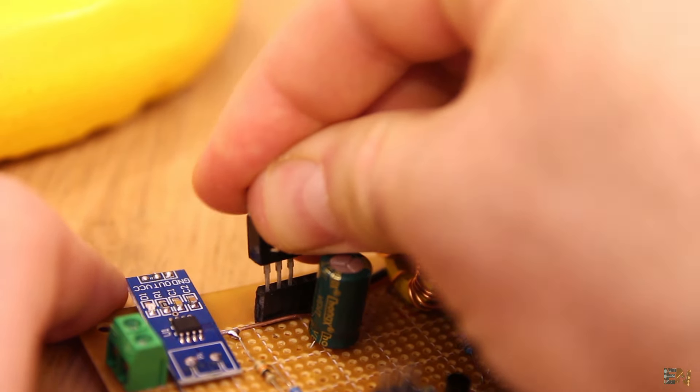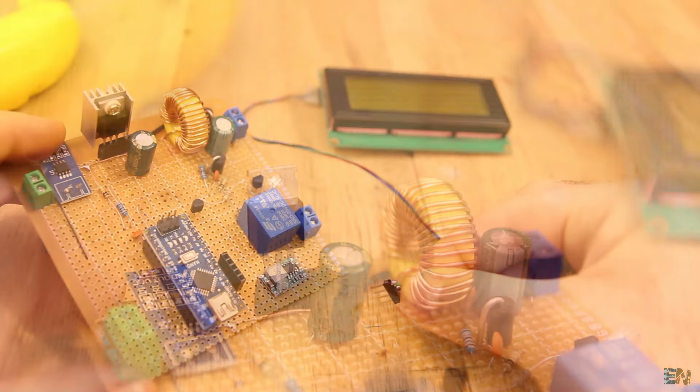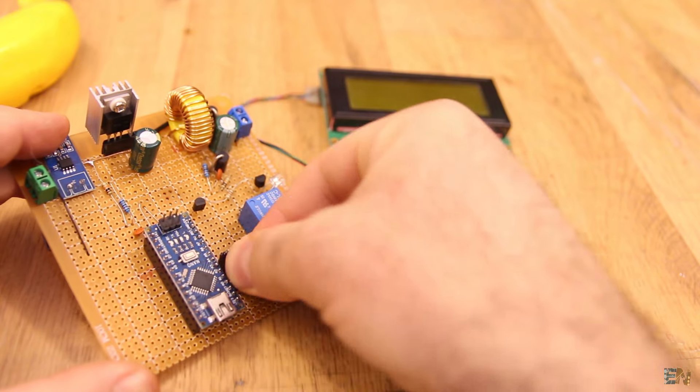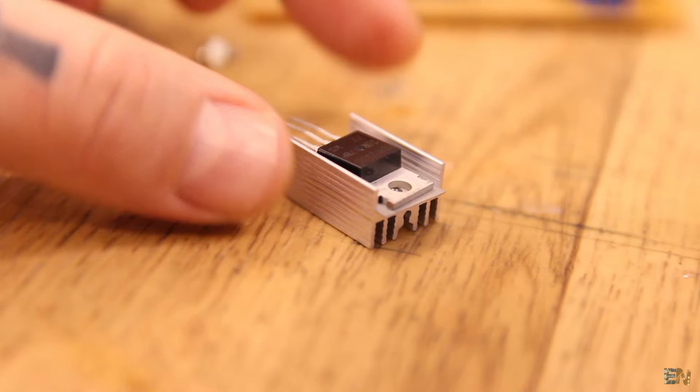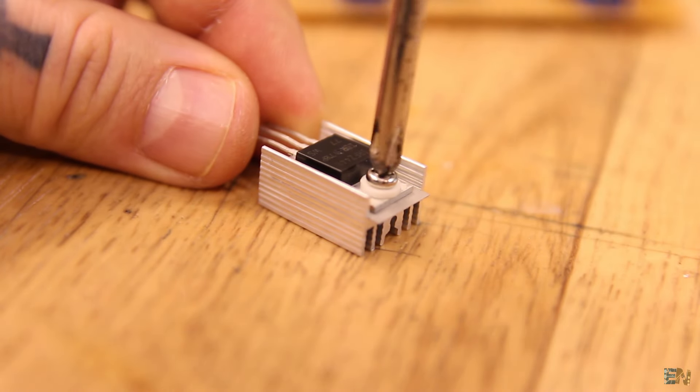For example, if the MOSFET will get burned, I won't have to desolder it and then solder a new one. I also make sure to add a small heat dissipator on the MOSFET, which by the way, if this wasn't a prototype, it should be a lot bigger.